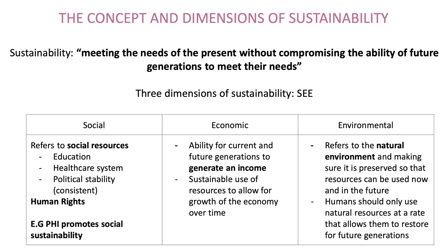Social sustainability refers to social resources such as education, healthcare systems, consistent political stability, and human rights. An example of social sustainability is private health insurance, as it lessens the burden on the public system, thus allowing it to operate in the future.